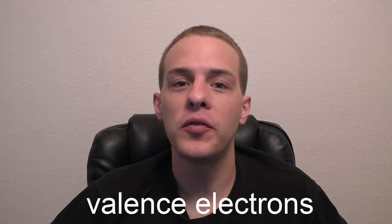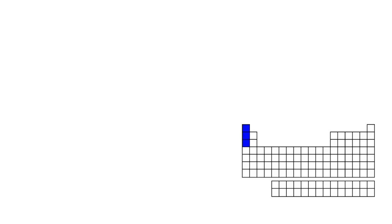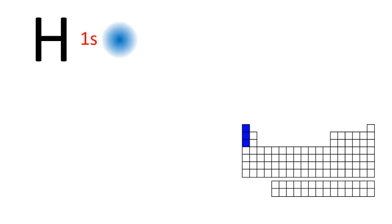If the outermost electrons are located in large orbitals, then we're going to have a large atom. If the outermost electrons are located in smaller orbitals, then we're going to have a smaller atom. Let's take a look at the outermost orbitals of hydrogen, lithium, and sodium — the first three group 1 elements. We've got the 1s orbital for hydrogen, the 2s for lithium, and the 3s orbital for sodium.